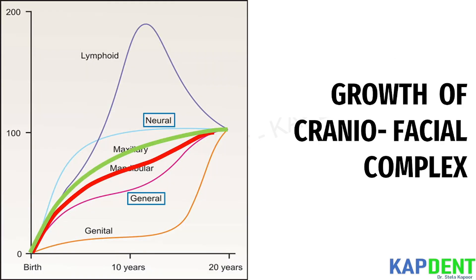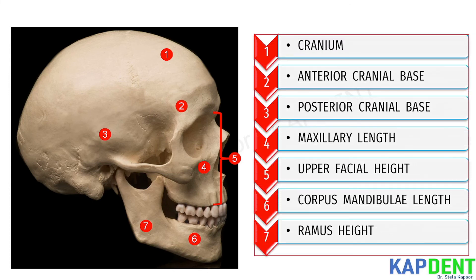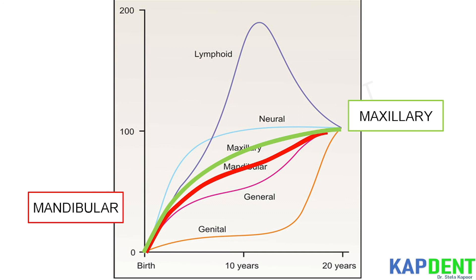The development and growth of the craniofacial complex cannot be precisely described by these four curves, because craniofacial growth is somewhat integrated between the neural and general maturity patterns. The growth of the craniofacial complex follows a gradient moving from the cranium, which is most mature, to the anterior cranial base, followed by the posterior cranial base, then the maxillary length, upper facial height, corpus mandibular length, and finally the ramus height, which is the least mature. From this gradient we can comprehend that the growth of the mandible closely approximates the general S-shaped pattern of somatic maturation.